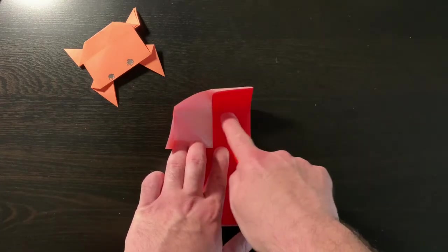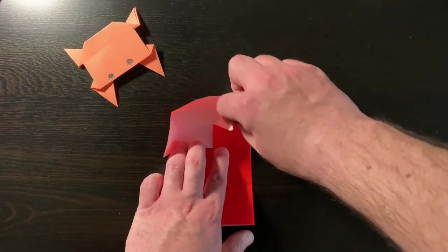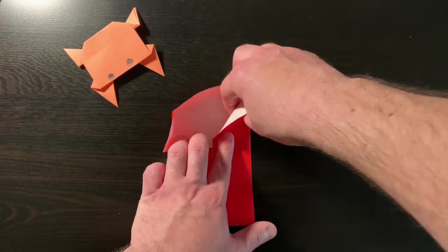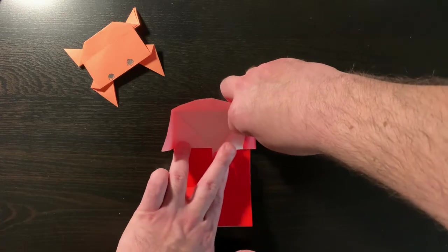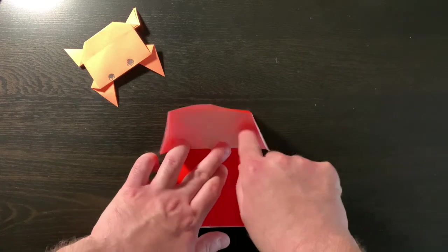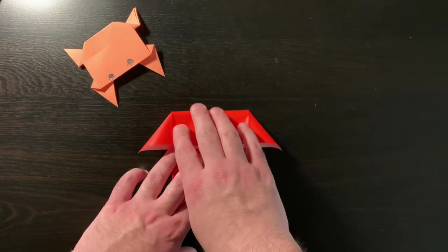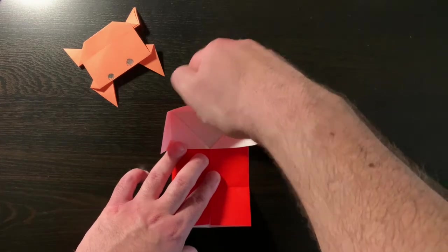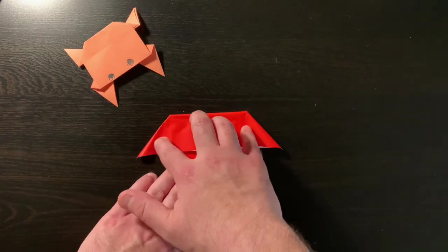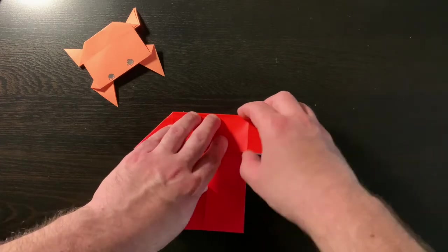We'll take this edge, this crease to meet this edge. We are opening up the pockets. We will open up the pockets and push down from this top flap. And now we have what looks like part of a boat.